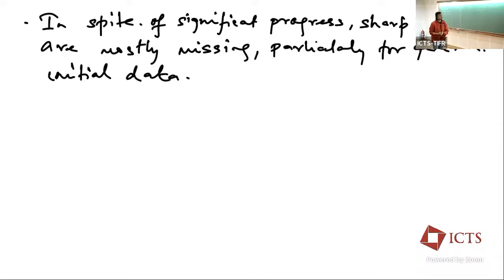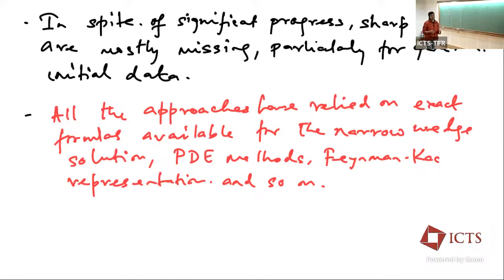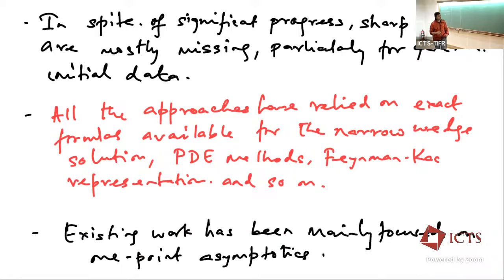In spite of significant progress, sharp results are mostly missing. Although there has been some progress for the narrow wedge case, for general initial data much less is known. All approaches so far use exactly solvable methods, relying on exact expressions in terms of Laplace transforms, PDE methods, Feynman-Kac representations, and so on. Most of the literature is also focused on one-point tails; ideally one would want to understand the joint distribution, but current methods only allow access to one-point behavior.